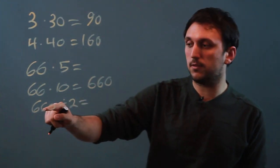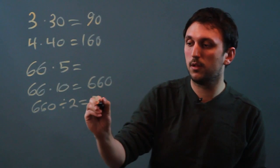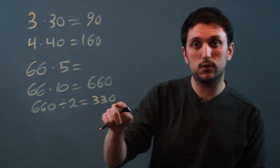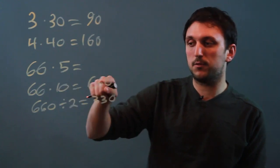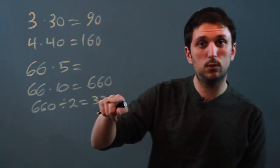And that's easy because 66 divided by 2 is 33, and we just have a 0 at the end. So 66 times 5 is 330. Because times 10, 660, divided by 2, 330.